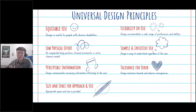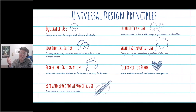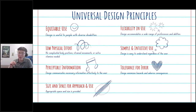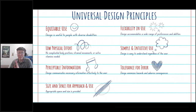The next principle is flexibility in use — it accommodates a wide range of preferences and abilities. Think of a dimming light switch where you can adjust the brightness. If the bright lights are too much, you can dim them; if you can't see well enough, you can turn up the brightness. It accommodates any reason or ability.